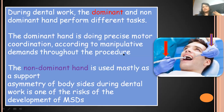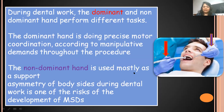During dental work, we have one dominant hand performing the task and the other non-dominant hand just supporting. The dominant hand is involved in performing precise motor coordination while the non-dominant hand is used mostly as support. This itself creates an imbalance and asymmetry in the body during dental work. We are doing this all the time, from morning till evening, repeatedly over and over again when we work on our patients — putting all of us at a high risk of developing musculoskeletal disorders.